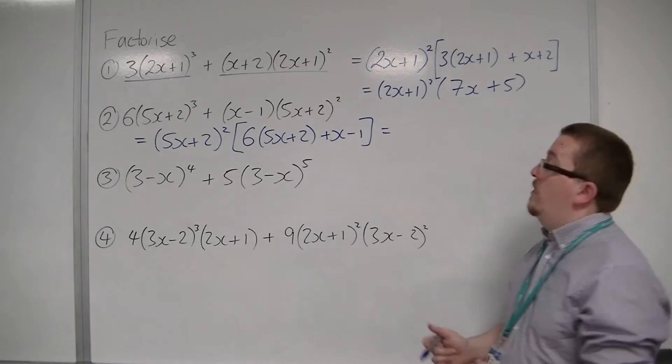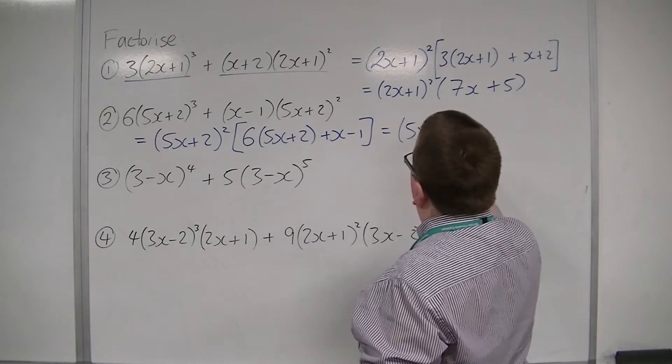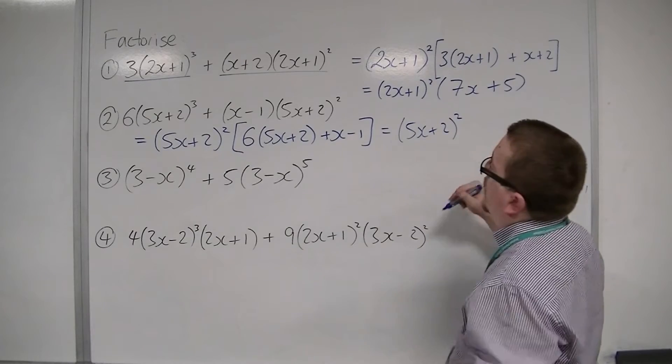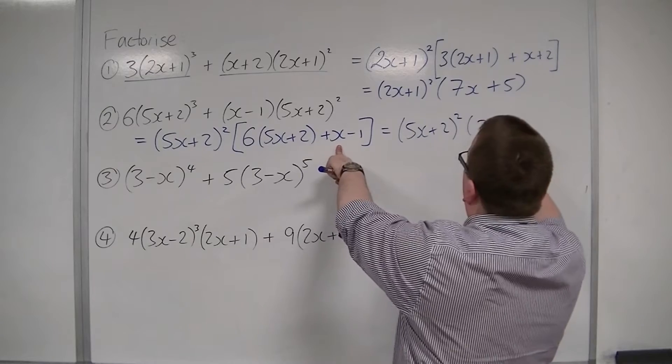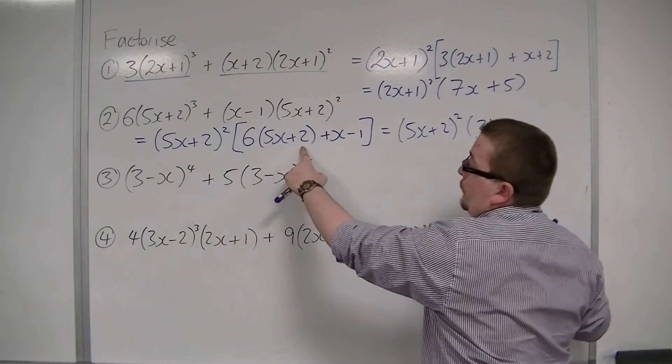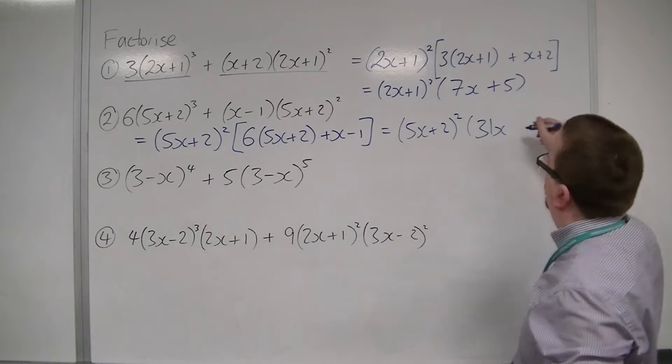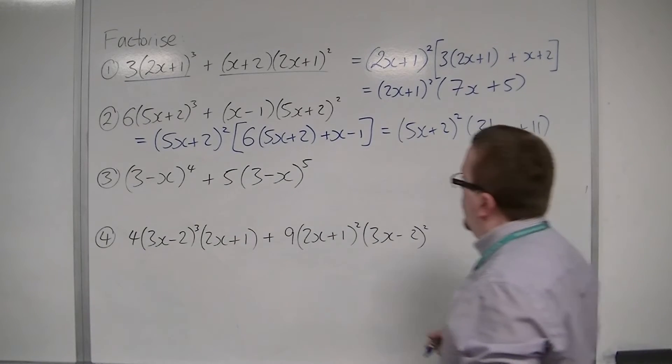Simplifying that second bracket, we're going to have six lots of 5x, so 30x plus an x is 31x. Then, I've got six lots of 2 is 12, take away 1 is 11. So, 31x plus 11.